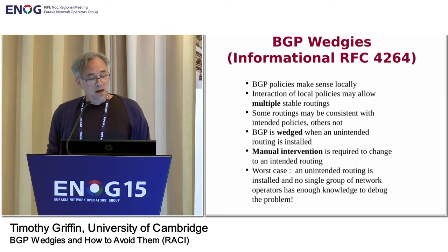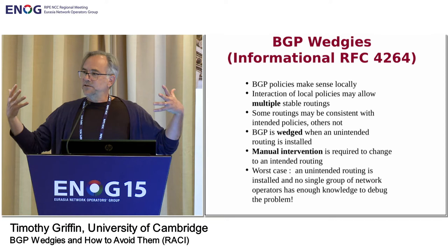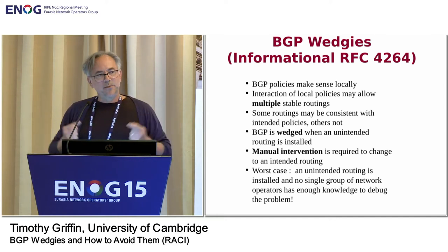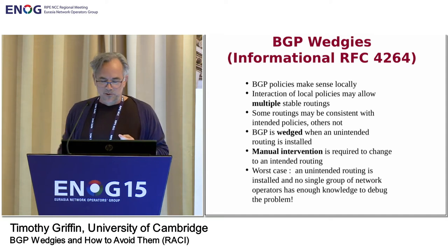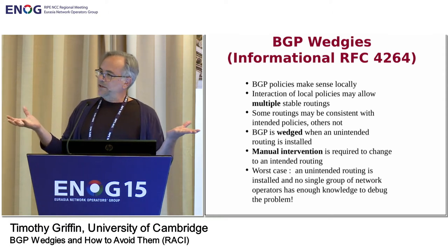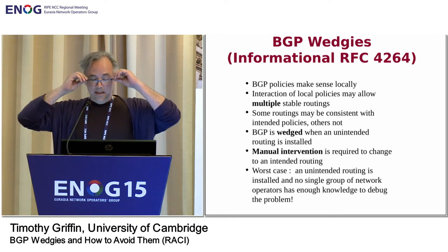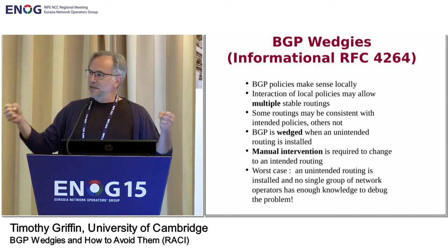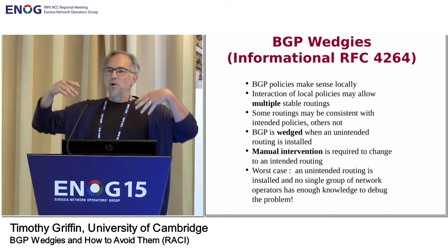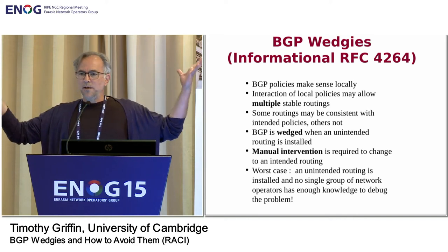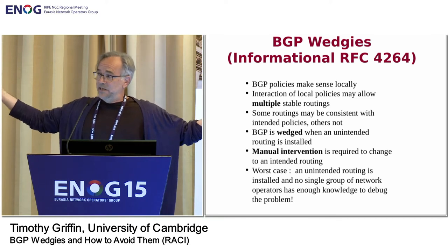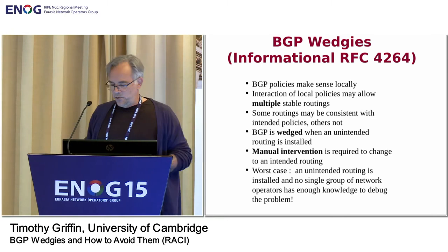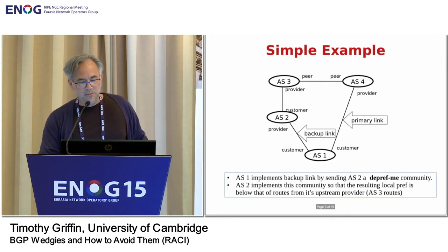It arises when BGP policies make sense locally — you look at your configuration, it looks perfect — but different configurations interact in a way that gives us multiple unique routings, stable routings for BGP. Contrary to popular belief, BGP is not guaranteed to find a unique stable routing. There can be multiple routings. Some of those stable routings might be consistent with your policies, others not. And when it's not consistent, the system is wedged — that is, it's stuck. You have to actually manually intervene in order to get it unstuck. And the worst case is when the interaction of policies is such that no one group of operators has enough global knowledge to debug the system, since we often don't share our policies between ISPs.